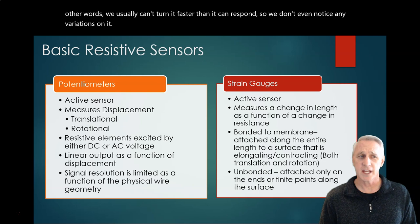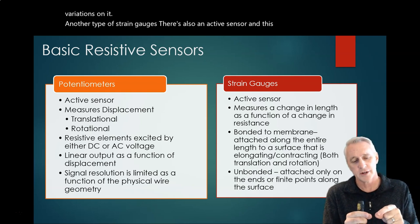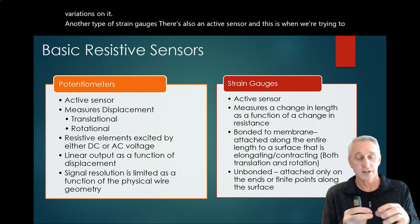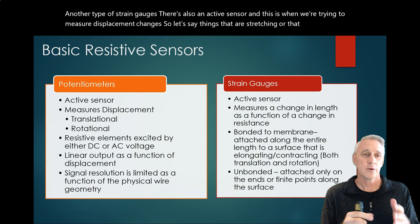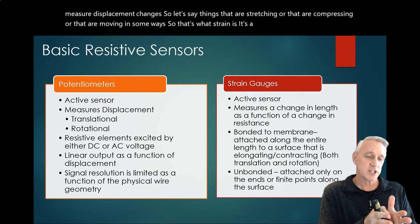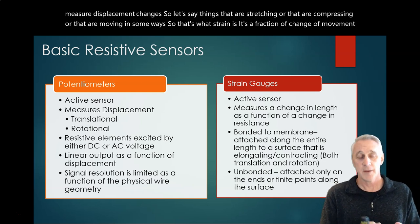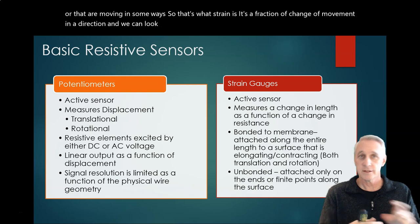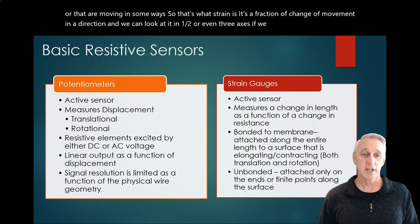Another type is strain gauges, also an active sensor. This is when we're trying to measure displacement changes - things that are stretching or compressing or moving. So that's what strain is - it's a fraction of change of movement in a direction. And we can look at it in one, two, or even three axes for different strain gauges.